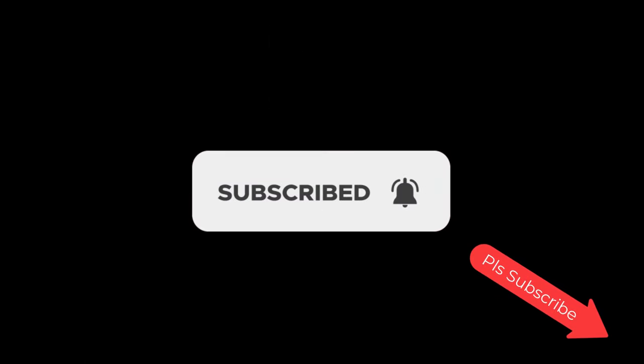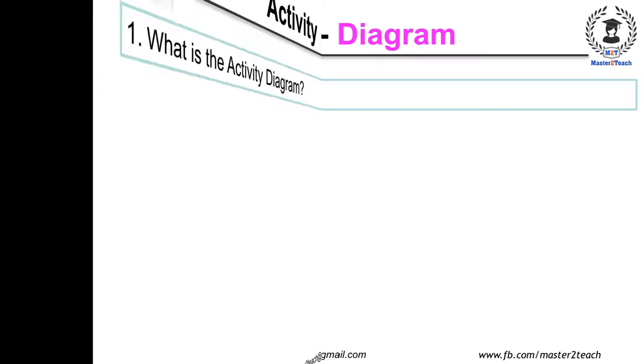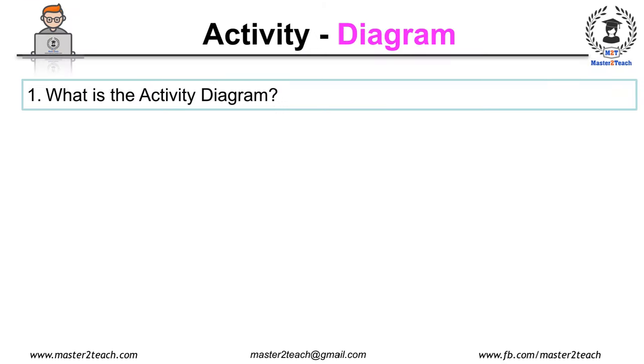If you haven't subscribed to our channel, please click on the subscribe button and subscribe to our YouTube channel. Let's start. What is the activity diagram? One of the another important diagram in UML is the activity diagram which shows a dynamic view of the system.